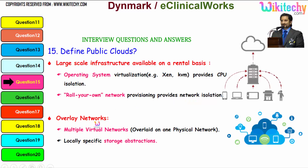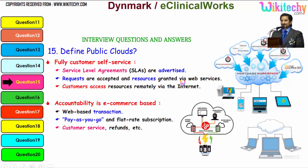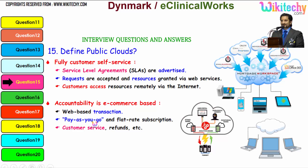Overlay networks provide multiple virtual networks overlaid on one physical network, along with location-specific storage abstractions. The public cloud is fully customer self-service. Service level agreements are advertised, requests are accepted and resources granted via web services, and customers access resources remotely via the internet. Accountability is e-commerce based — web transactions are pay-as-you-go and flat-rate subscription — and customer service and reference are also provided.